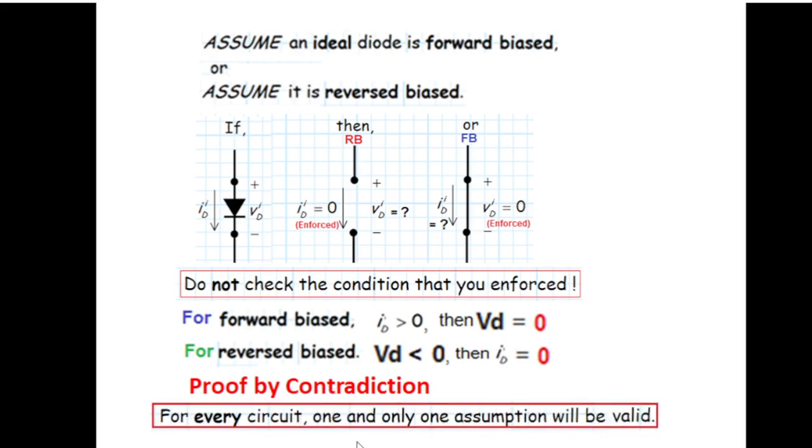Finally, one point: although this will not be applicable in all the circuits, especially with a single diode, keep in mind that for every circuit one and only one assumption will be valid. This is very important. The moment you have four options of solving the circuit and in the third option you get the circuit to be correct, then there is no need of going for the fourth option.